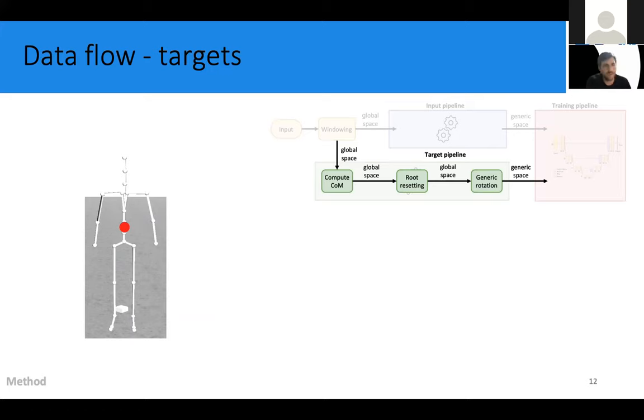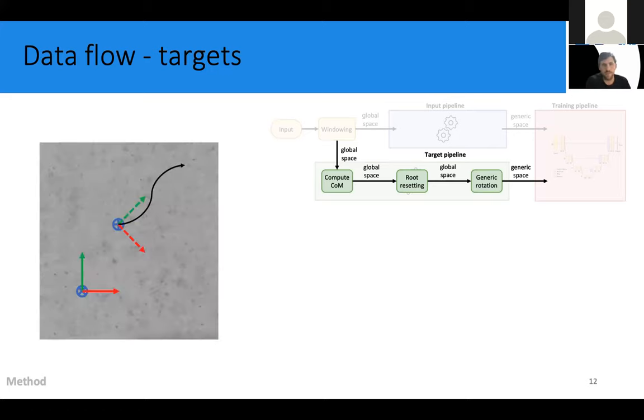We then reset the horizontal position of the center of mass again to the origin of the window. And finally, we rotate the target window into our generic frame like we also did with the input windows.